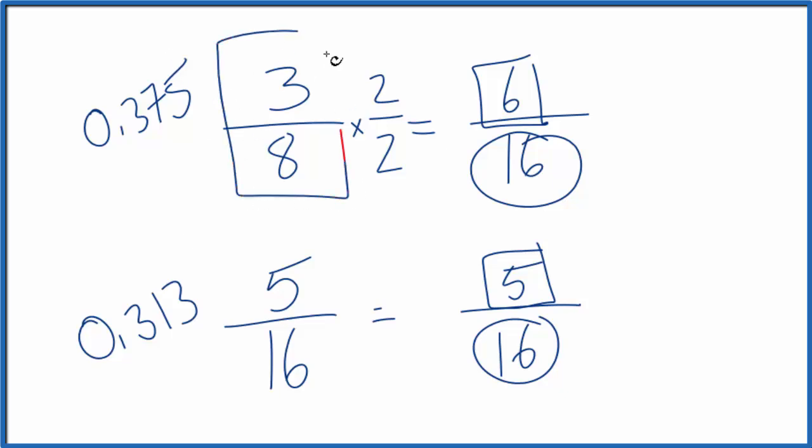3 eighths, this is larger than 5 sixteenths. 0.375 is larger than 0.313. This is Dr. B. Thanks for watching.